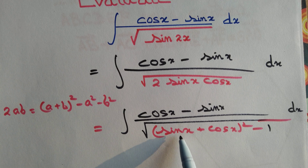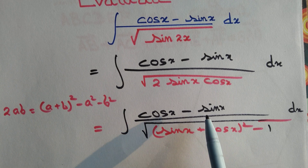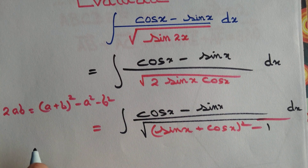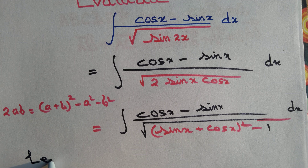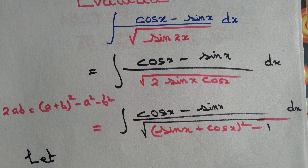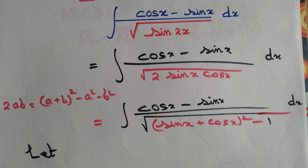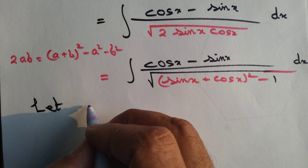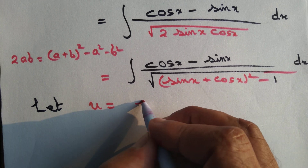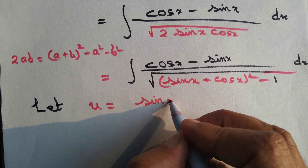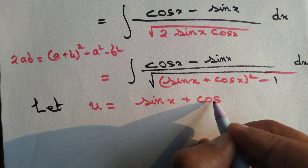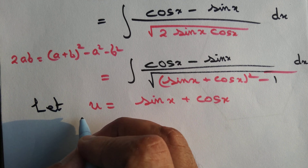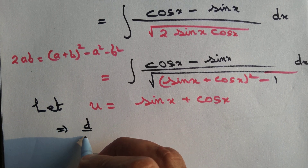Now we have sin x + cos x in the denominator. If you differentiate it, the derivative of sin x is cos x, and the derivative of cos x is minus sin x. So you exactly get the numerator, cos x minus sin x. This suggests we should use substitution.